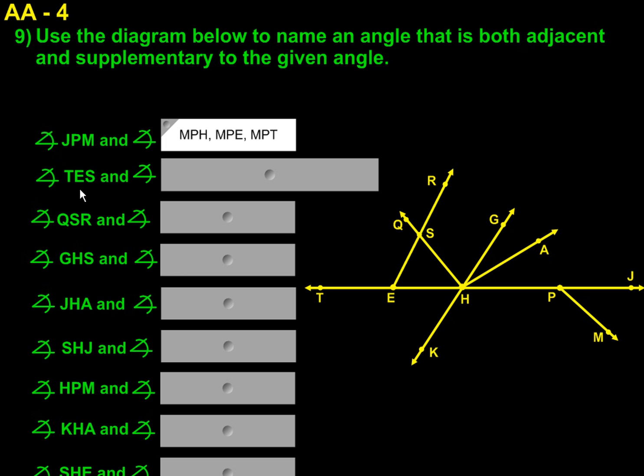Then we have angle TES. So here's T, here's E, and here's S. So we're working off the top of this line now. And any angle that has E as a vertex and keeps this straight line running can work. And as you can see from the extended box, there's quite a few. So we have SEH, SEP, SEJ.